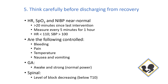Try to get heart rates below 110 and systolic blood pressures over 100. Make sure bleeding, pain, temperature, nausea, and vomiting are controlled. If it's a general anesthetic, make sure the patient is awake and has normal power. For spinal anesthesia, make sure the level of the block is decreasing — the patient can move their legs, or that you've measured it below T10.